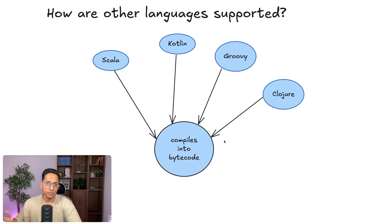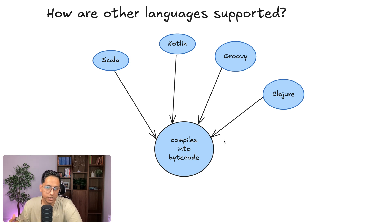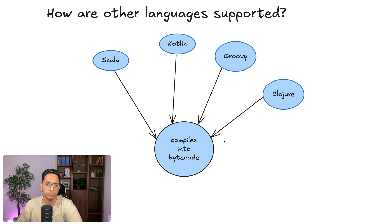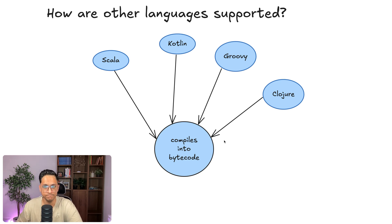How are other languages supported? Languages like Scala, Kotlin, Groovy, and Clojure — anything that can be compiled into the bytecode format understood by the JVM can run on it. The JVM doesn't care if it's Java, Kotlin, Groovy, or whatever. If you have bytecode, it can run it.